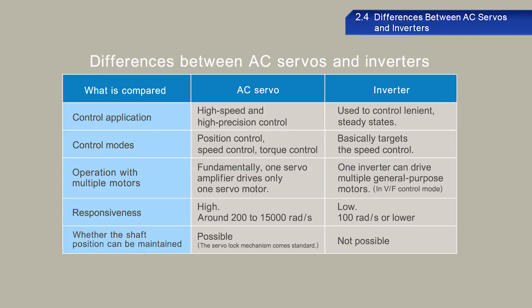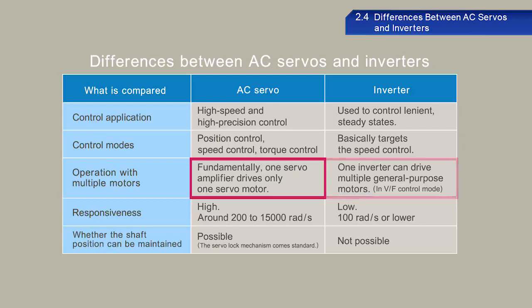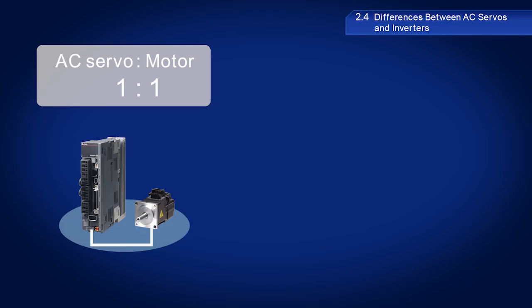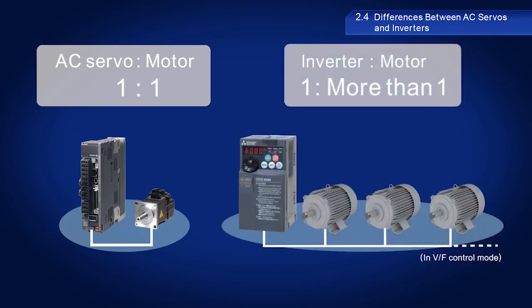Another difference is the number of units that can be connected. An AC servo can only be connected to one motor, whereas inverters can be connected to multiple motors.